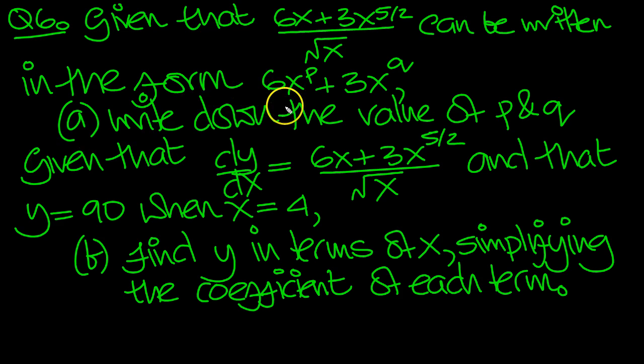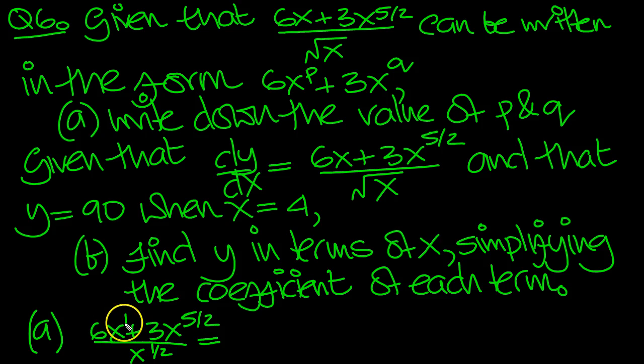So here's the question then. We need to use properties of indices and fractions and split this up. So let's do part a. This thing is 6x plus 3x to the 5 over 2. Instead of root x we're going to write x to the half. Now let's split it up. It's 6x over this thing underneath. This is power 1.